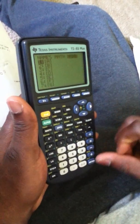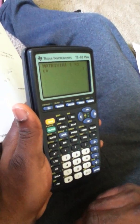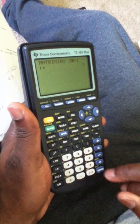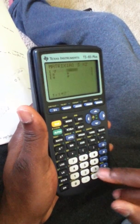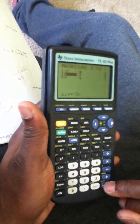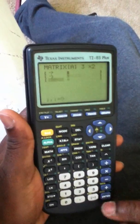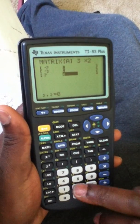You go to matrix, edit, and you have a number of rows and columns. You have a 3 by 2, so you have minus 7, 8, minus 3, 9, 7, and 2.